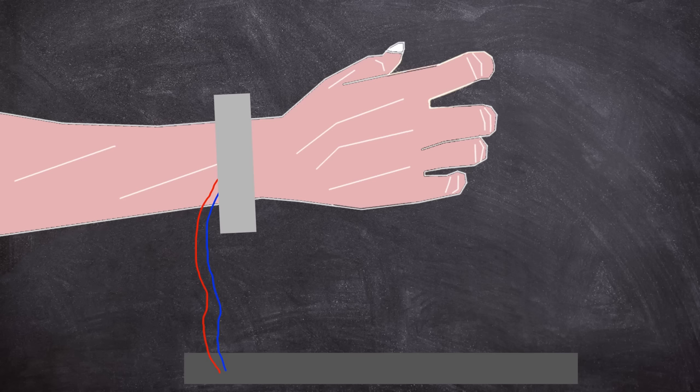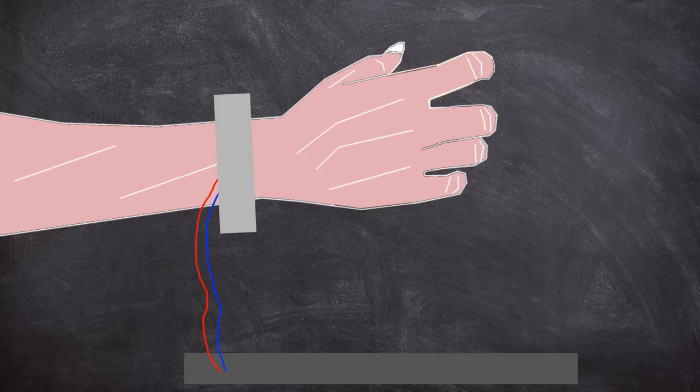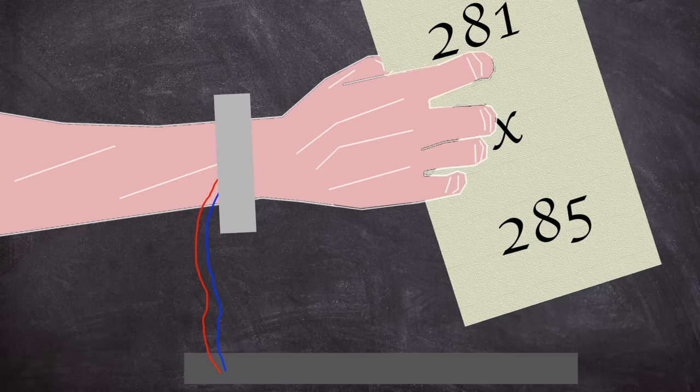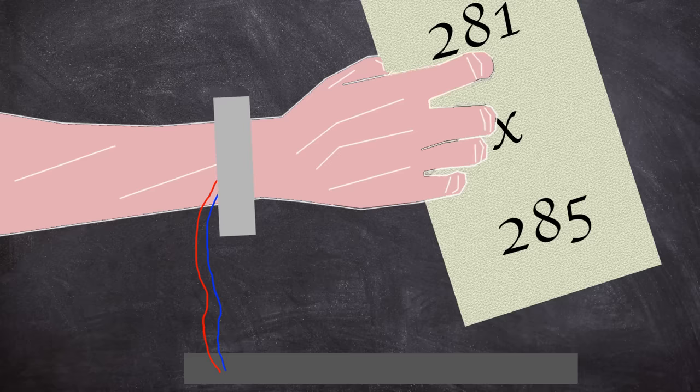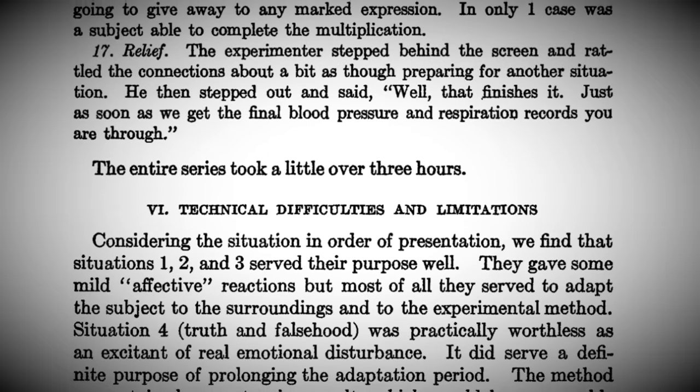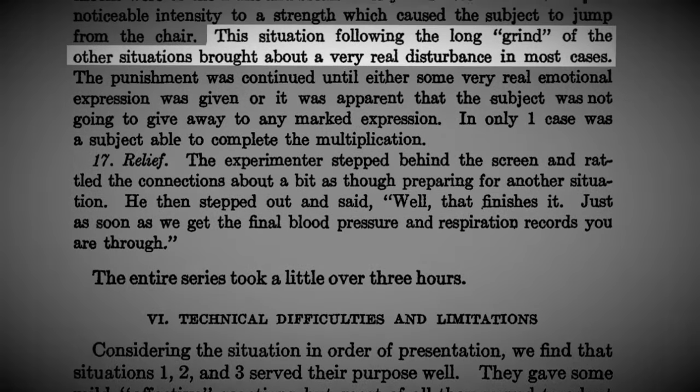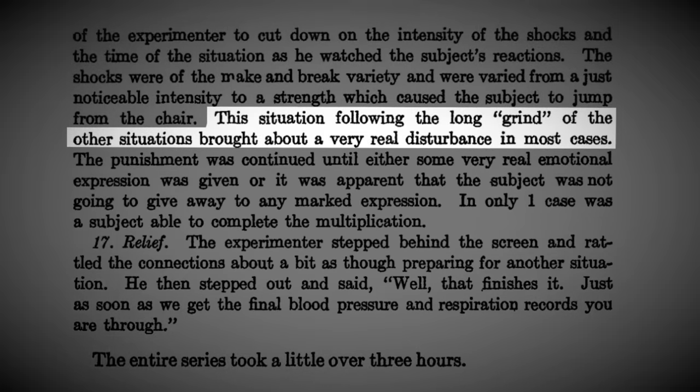Clearly Landis found electric shocks to be pretty handy in psychological experimentation as he managed to wrangle it in again. The subject's arm was connected to an armband and a stethoscope. Both of these were attached to an inductorium. The subject was given a card which had two numbers printed on it and told to multiply these mentally while they received electrical distraction. The electric shocks were increased and decreased in order to wear the subject down. Landis would later write: This situation, following the long grind of the other situations, brought about a very real disturbance. The electric shocks continued either in Landis's own words, some very real emotional expression was given, or it was apparent that the subject would not give away any marked expression. Which makes you wonder how long this would have gone on for. Only one person was actually able to correctly answer the multiplication question.